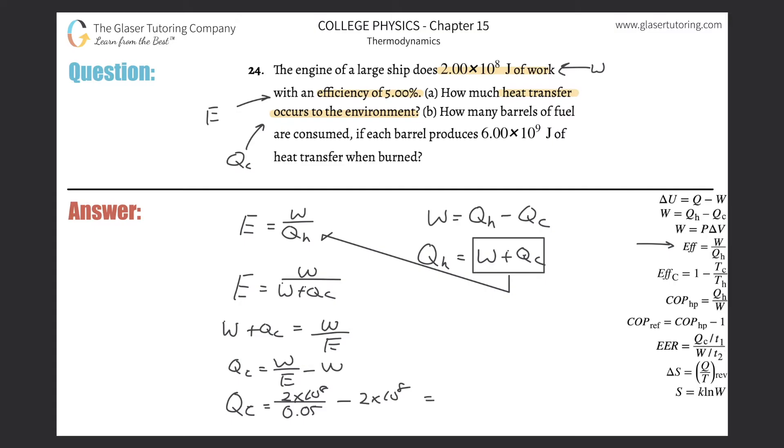2×10^8 divided by 0.05 minus 2×10^8 gives us about 3.8×10^9 joules. That is the heat loss to the environment.